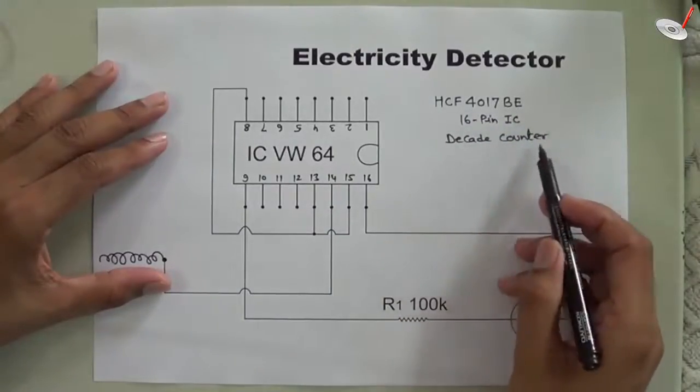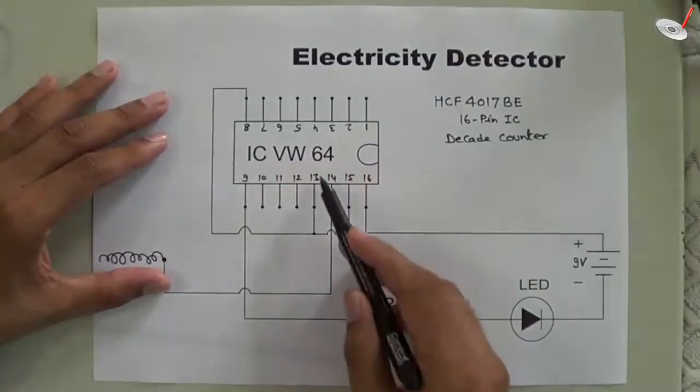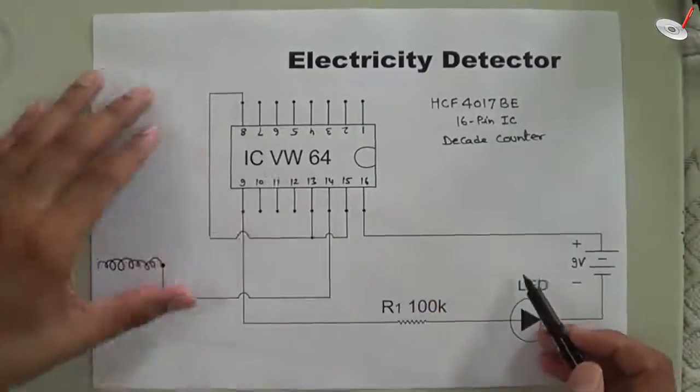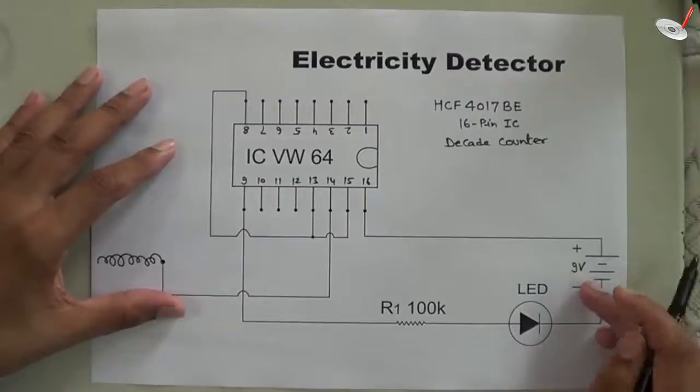a 16-pin IC decode counter. These are the pin configurations for the IC, I will discuss the connections later. After the IC, we have to use one 100 kilohm resistor, one LED, one 9-volt battery, and one wire for detection. Now see the pin diagram for this IC to know more about it.